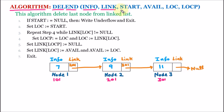The linked list contains a start pointer. The start pointer contains the address of the first node, which is 101, meaning start is pointing to node 1.